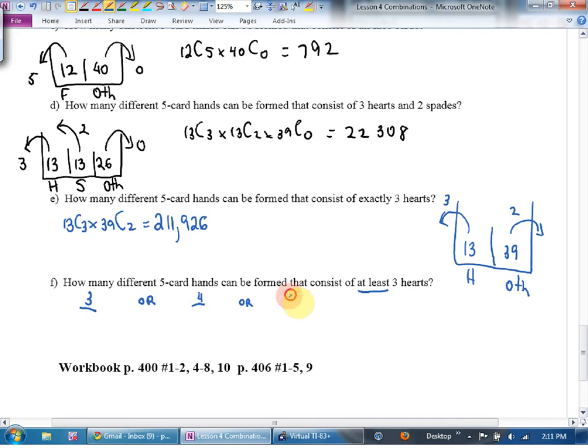Now, we already have three. It's 13, choose three, and 39, choose two. But I find, by setting it up nice and wide and spaced like this, I can usually just drop the plus sign, and I can look at this in my bucket and figure out what this is going to be. Four hearts. What would that be? 13, choose four. And 39, choose one. Or. Five hearts. What would that be? 13, choose five. And 39, choose zero.